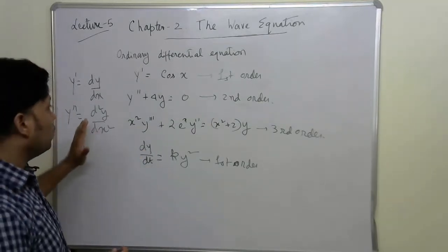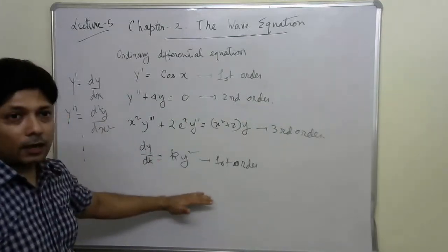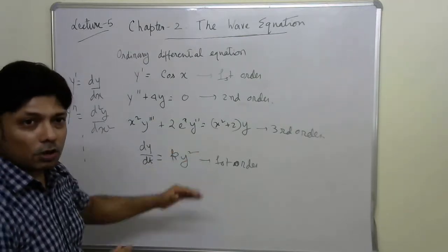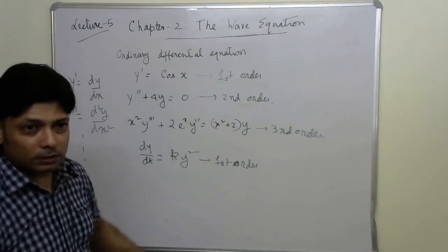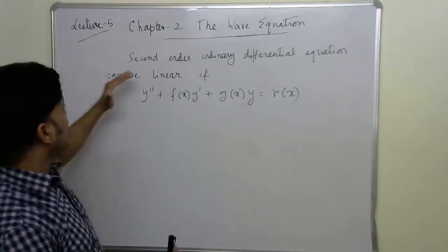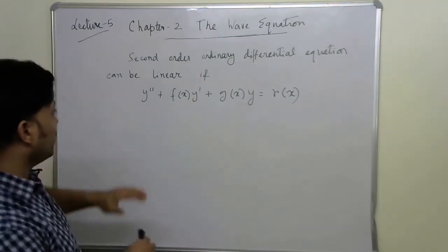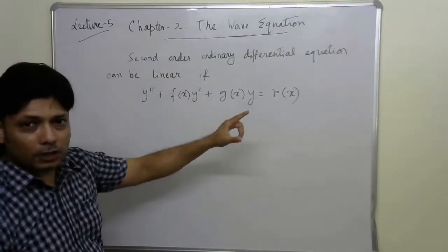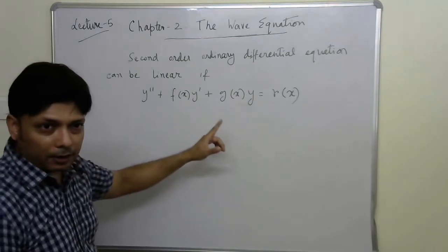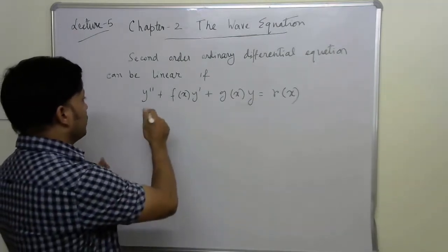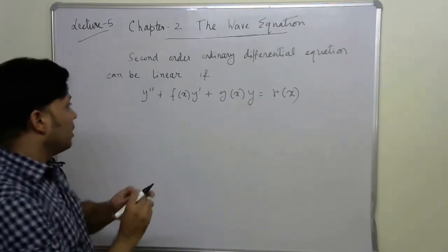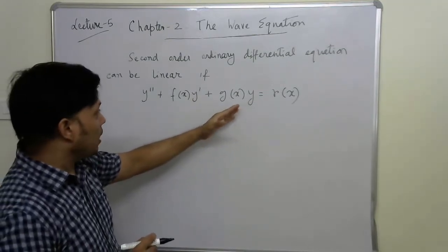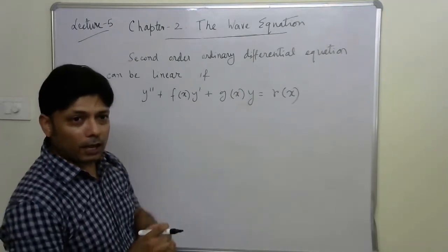Now let's see how to identify a linear ordinary differential equation, and particularly a linear homogeneous ordinary differential equation. A second order ordinary differential equation is linear if we can write it as: y'' + f(x)·y' + g(x)·y = r(x), where f(x), g(x), and r(x) are functions of x.